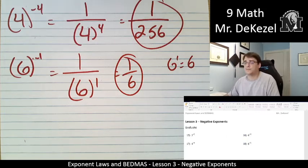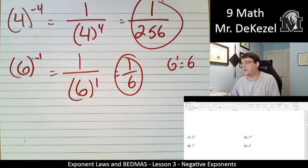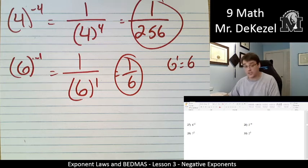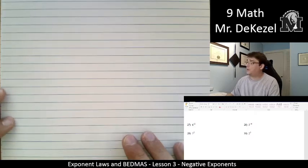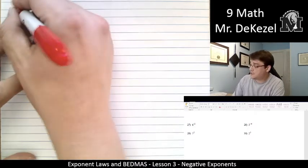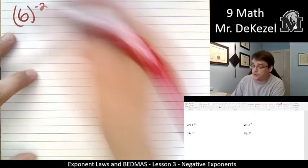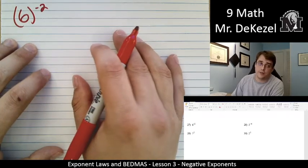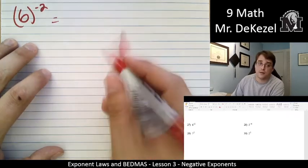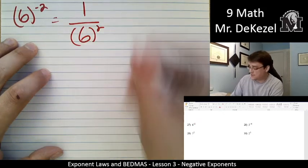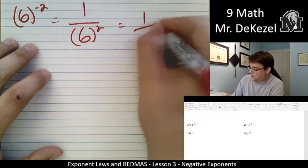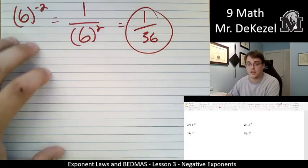Go ahead and give the next few a try, and then you can see if you got the right answer. I'm just going to go ahead and continue on here. We have 6 to the power of negative 2. So I'm going to flip over the whole thing: 1 over 6 squared. 6 times 6 is 36, so this is 1 out of 36.